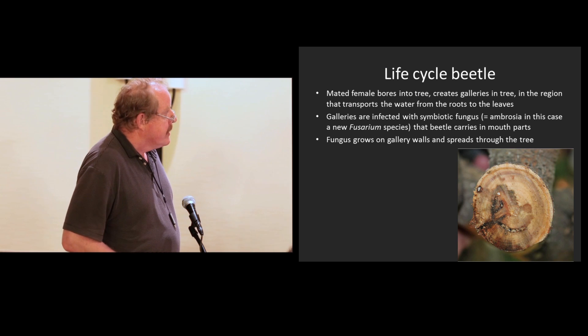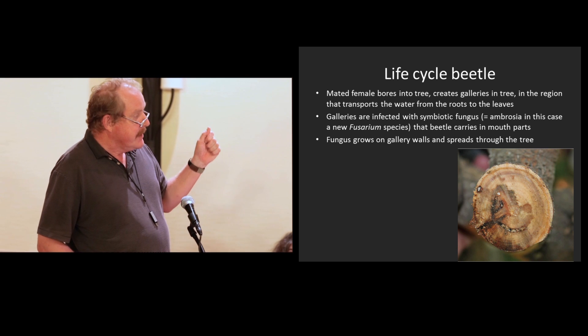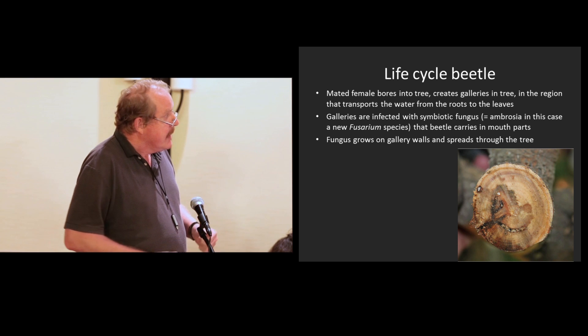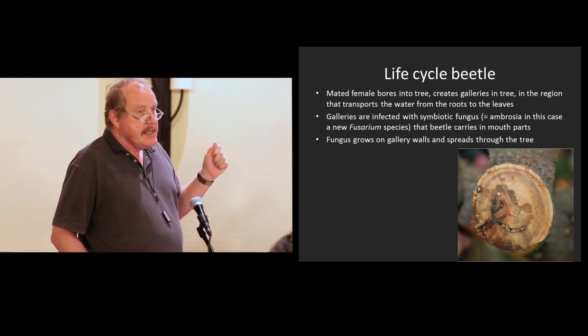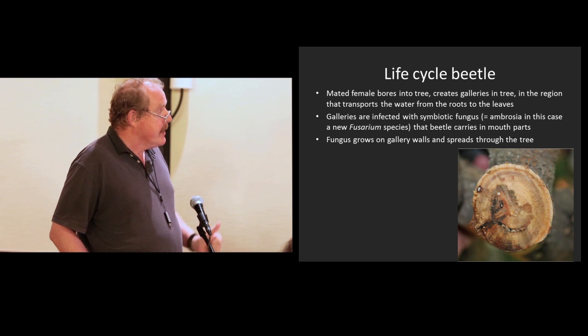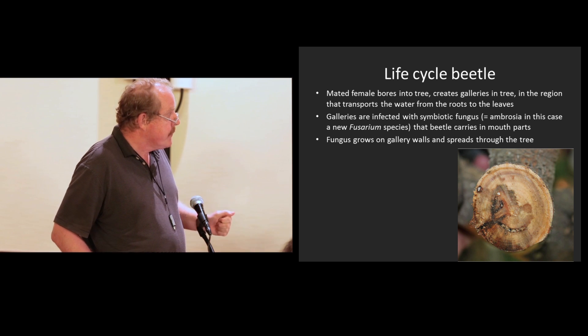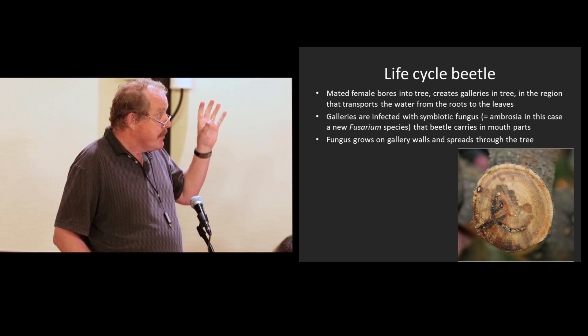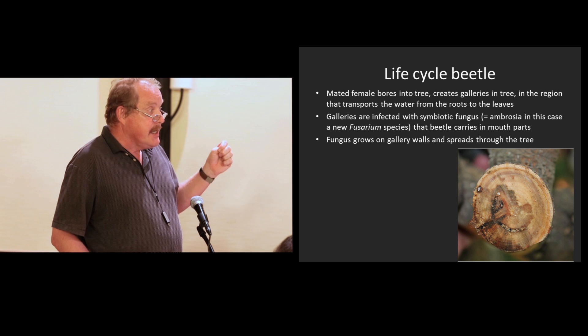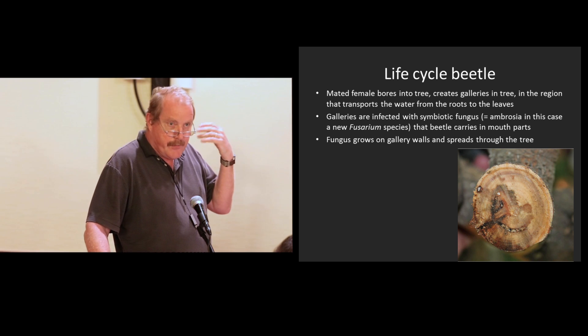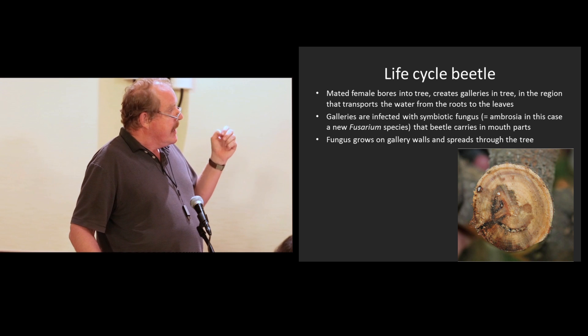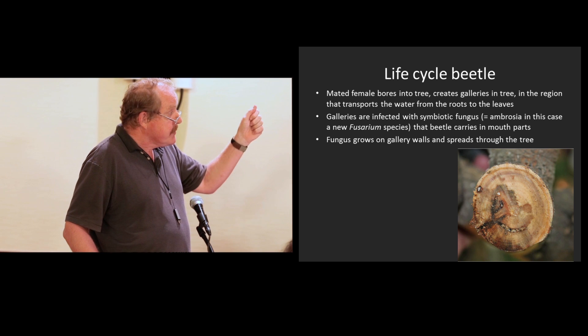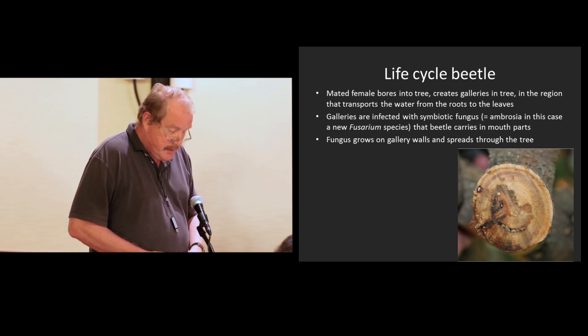What is the life cycle of the beetle? Mated females bore into a tree, and she creates a gallery. And you can see here the galleries, these lines in the tree. The galleries are placed in the region of the wood where the xylem goes, where the water transport goes from the roots to the leaves. These galleries are infected with a symbiotic fungus, the ambrosia. And in this case, it's a new species of fusarium. We didn't know this thing before. The beetle carries this in its mouth parts and infects the galleries. The fungus grows on the gallery walls and spreads through the tree.